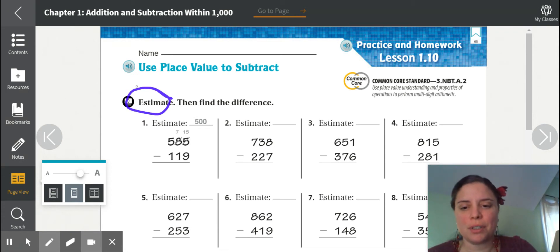So let's look at the first numbers. 585 is kind of close to 600 and 119 is kind of close to 100. You see how 19 is like you could go down. The 1 means we go down. The 8 means we go up if we're rounding and 600 minus 100 is 500. That's how they got the 500 up there.